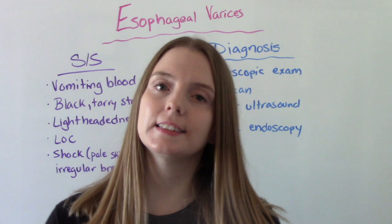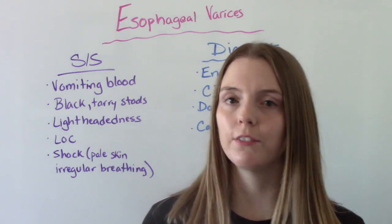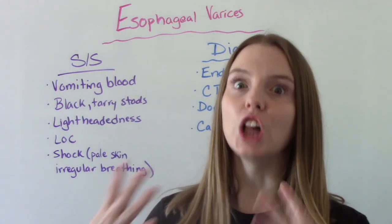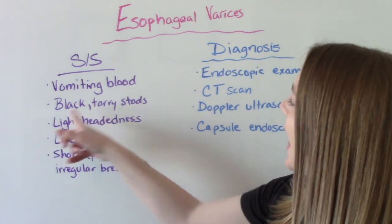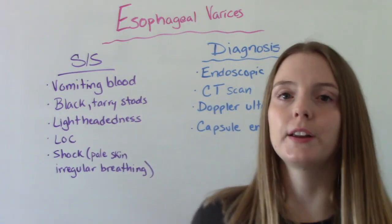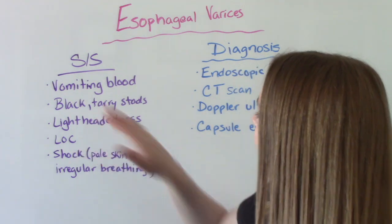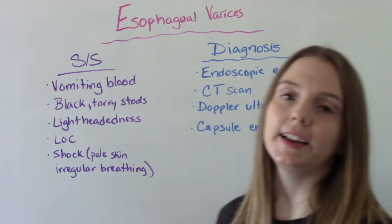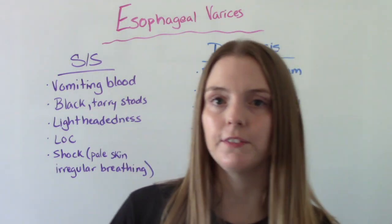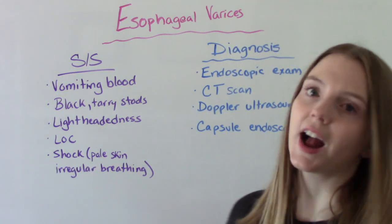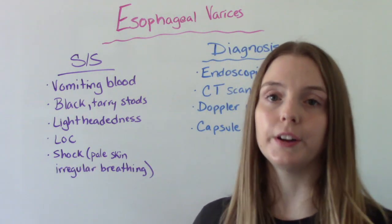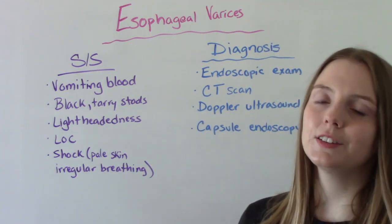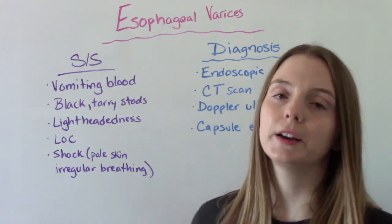When it comes to signs and symptoms, you're usually asymptomatic until you have a bleeding episode. Some big signs and symptoms include vomiting blood, especially large amounts of blood, black tarry stools indicating blood in the stool, feeling lightheaded, decreased level of consciousness, or being in shock. Signs of shock include pallor, pale skin, irregular breathing, and irregular heart rate. When this ruptures, it's an emergency — it can be life-threatening.